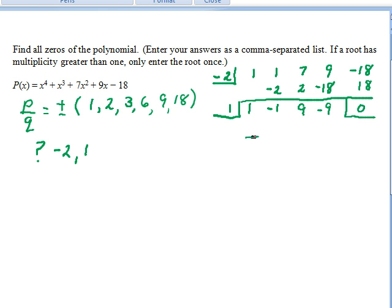So in our second quotient, 1 will be the leading coefficient. Times 1 is 1, add negative 1 is 0. Times 1 is 0, add 9 is 9. Times 1 is 9, add negative 9 is 0.